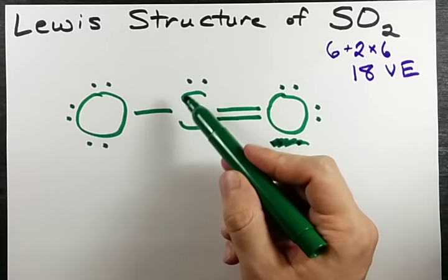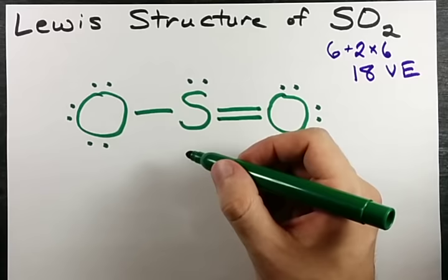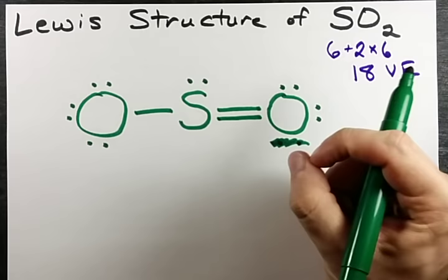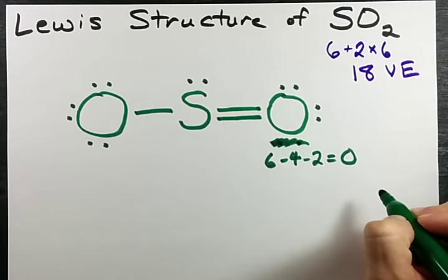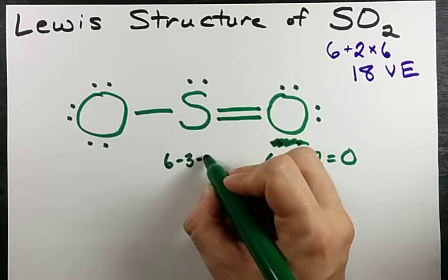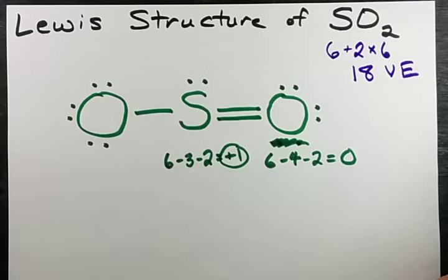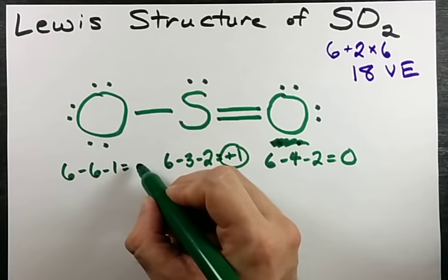Now, I do want to point out that there are formal charges on these atoms. Well, this atom has a formal charge of 0. 6 valence electrons minus the 4 dots minus the 2 lines gives me a formal charge of 0. 6 valence electrons minus the 3 lines minus the 2 dots gives me a formal charge of positive 1 on my sulfur.